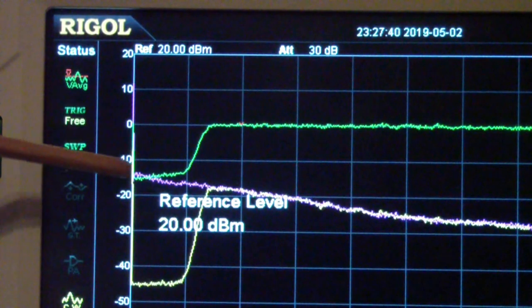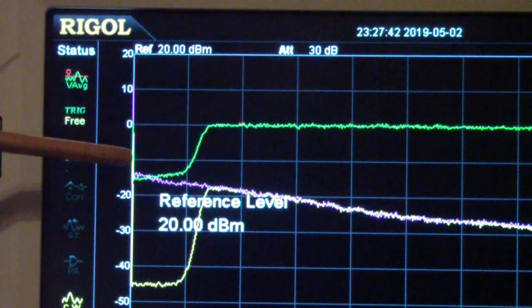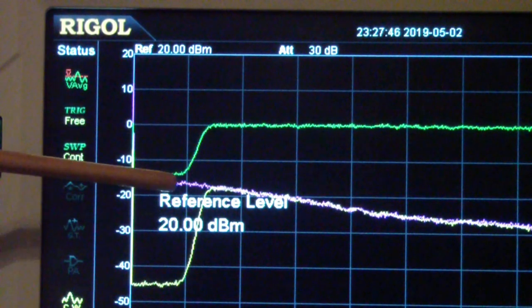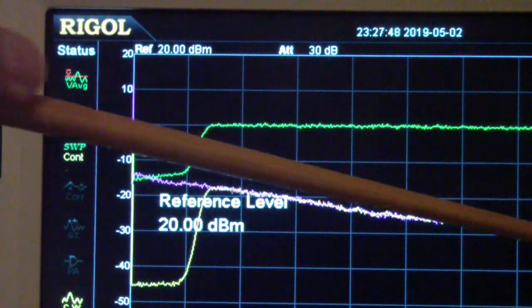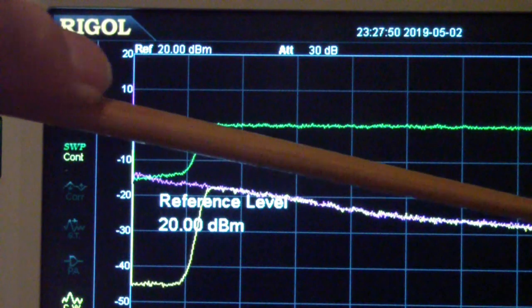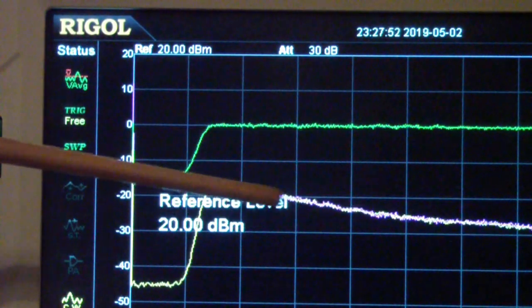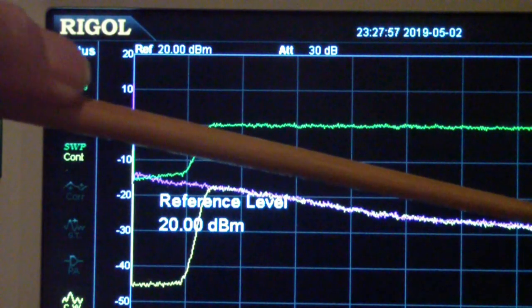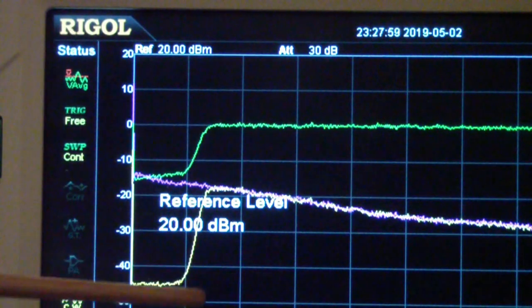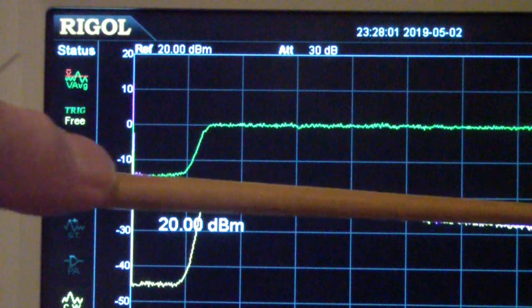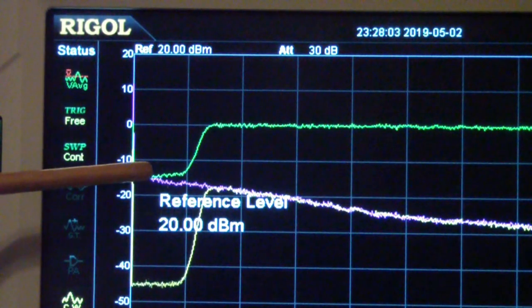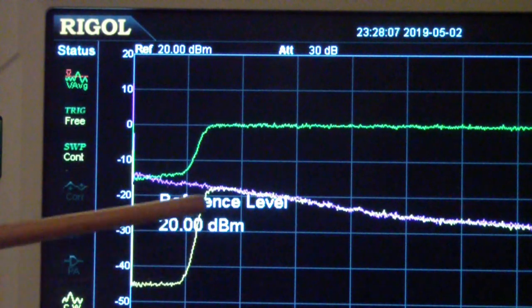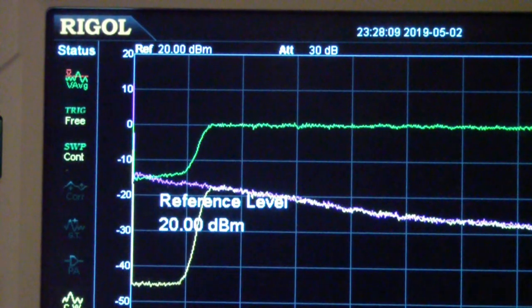So in other words, what we're displaying is the bandpass response of this filter with the leveling problem from the noise generator compensating for it. In other words, we're subtracting this declining noise level from this signal, and the result is the actual bandpass of this filter as though we had a completely flat noise source.